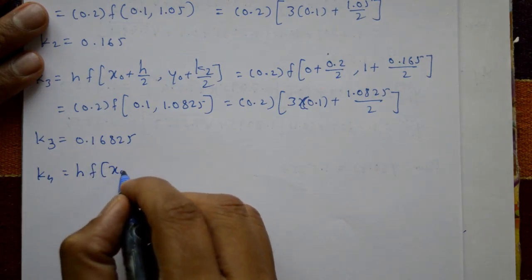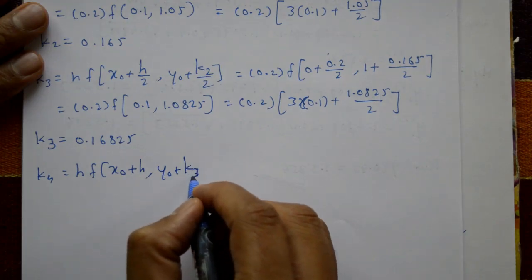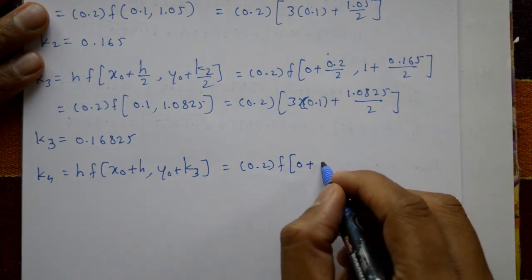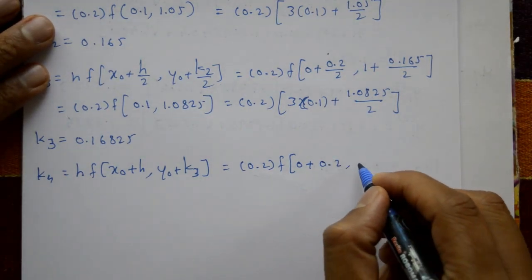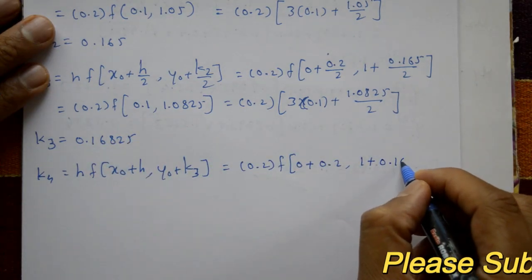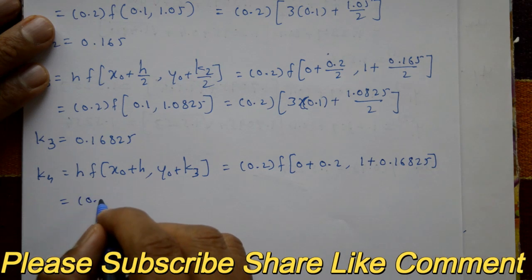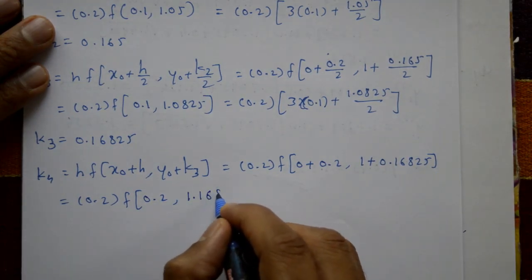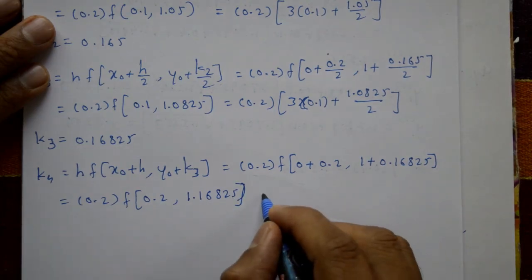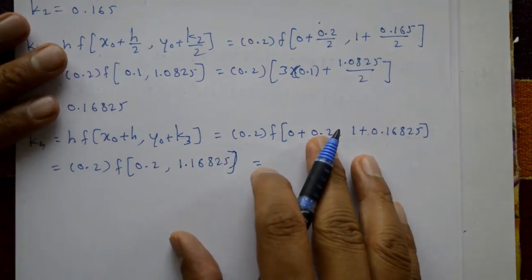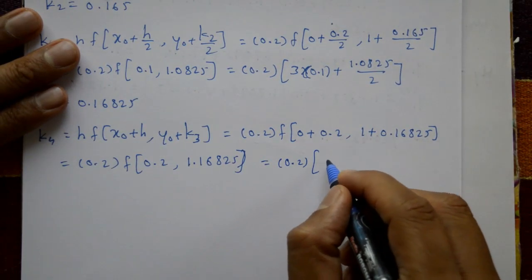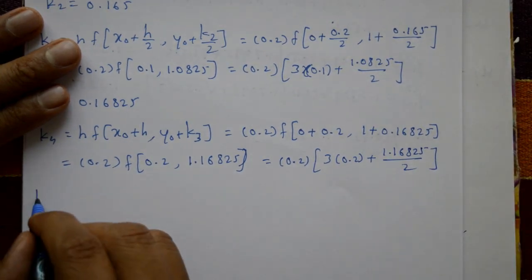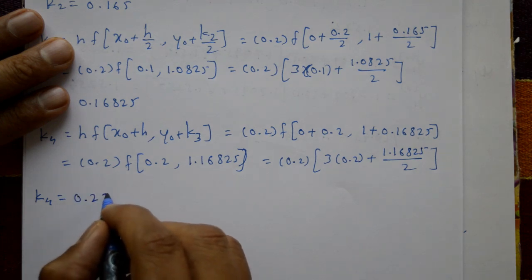Finally, k4 = h · f(x naught + h, y naught + k3). With h = 0.2, x naught + h = 0.2, and y naught + k3 = 1 + 0.16825 = 1.16825. Substituting into f(x, y): k4 = 0.2 × (3(0.2) + 1.16825)/2 = 0.2 × 1.18413 = 0.236825. So k4 = 0.236825.